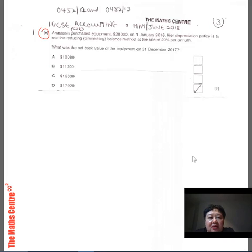Anastasia purchased equipment. The cost is $28,000, 1st of January 2016. The depreciation policy is to use reducing or diminishing balance and the rate is 20% per annum. So they say calculate the netbook value of the equipment on 31st December 2017.